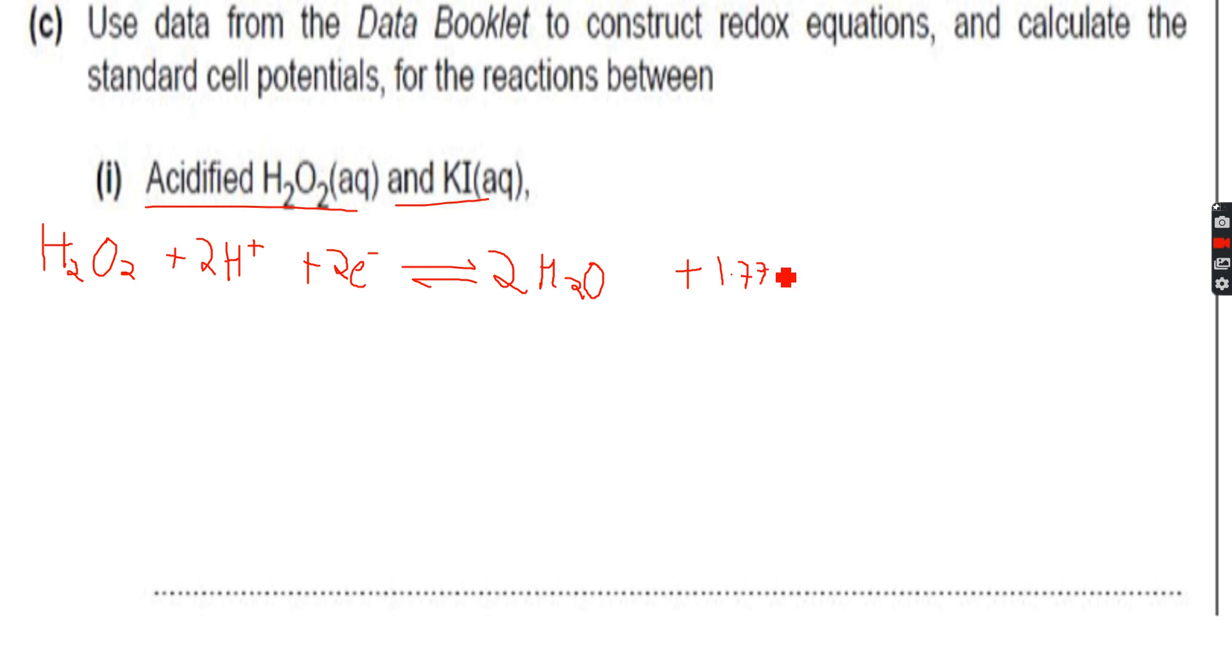Now for the other one, let's write for both potassium and iodine, then we'll see what happens. For K+, if we look at the data booklet, it is -2.92V. For I-, we have 2I- on the left with addition of electrons, so I2 + 2e- gives 2I-. When I look at the value in the data booklet for this one, it is +0.54V.